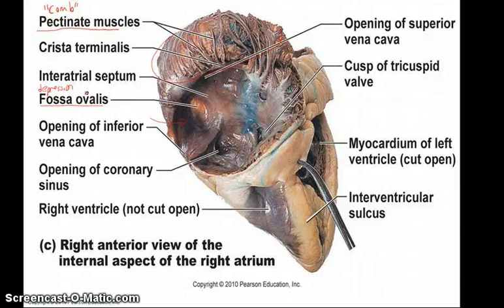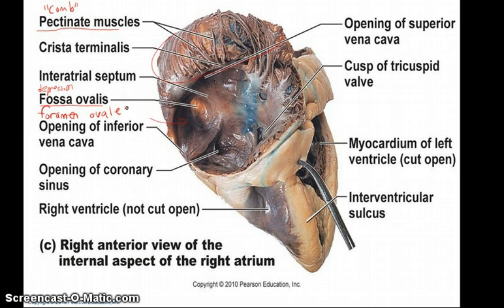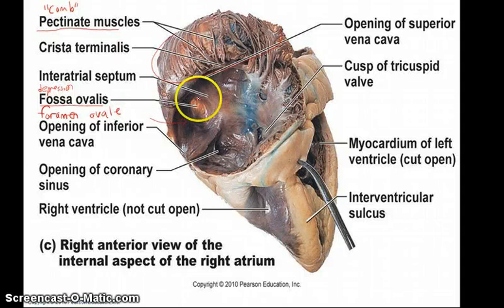The fossa ovalis is an area where there used to be an opening between the right and left atria, called the foramen ovale. This existed in the fetus during development when the lungs are not functioning, so there was an opening between the right and left atria. As the fetus develops, the opening closes, leaving this shallow depression called the fossa ovalis. This is only found in the right atrium.